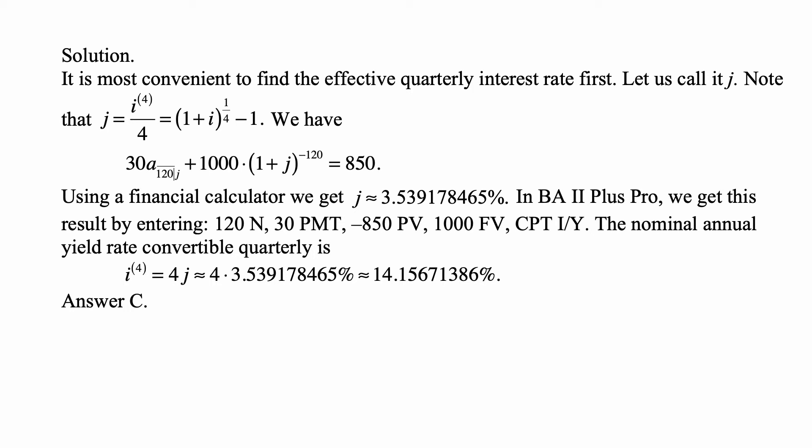So the nominal annual yield rate convertible quarterly is 4 times j, and that's i^(4). And the question asks us to find i^(4). And i^(4) is equal to 4j, which is 4 times the number we just found, and that's approximately 14.15671386%.